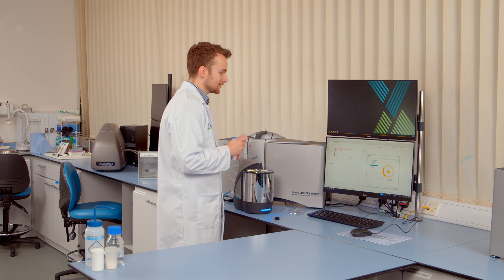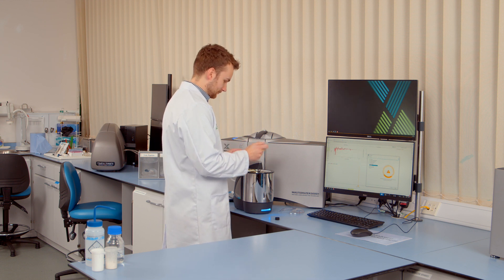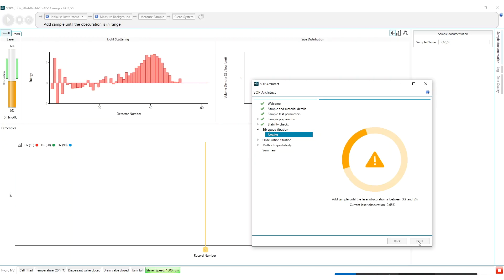So I'm now going to add the sample again until we reach the desired obscuration value. So now that we've added the sample it's going to stabilize at each stir speed for 30 seconds before carrying out a series of measurements at each individual stir speed. This will take between 15 to 20 minutes and allows you to go have a bit of time for a cup of tea or respond to some emails.